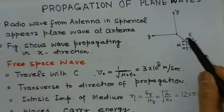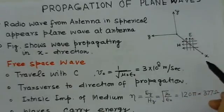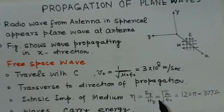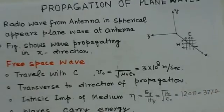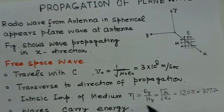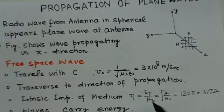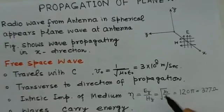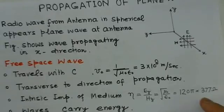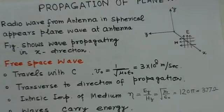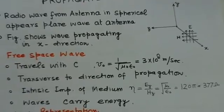The wave is transverse to the direction of propagation. The direction of propagation is x and the E and H fields are transverse to it. Another very important parameter is the intrinsic impedance of the medium, denoted as η = Ey/Hz. For free space, this value is √(μ₀/ε₀) = 120π or 377 ohms. These waves carry energy with them.